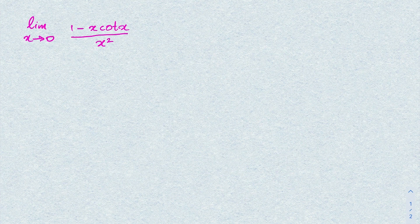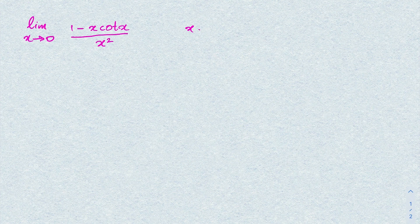If we apply the limit we get the 0 over 0 indeterminate form, so you might try to differentiate and apply L'Hôpital's rule. But in this video I am going to solve this limit using a different method. First, I am going to take the substitution x equals π times u.